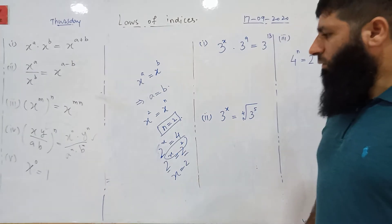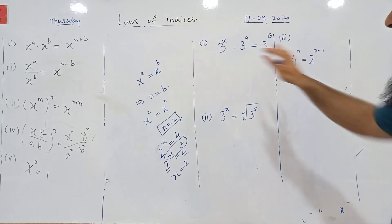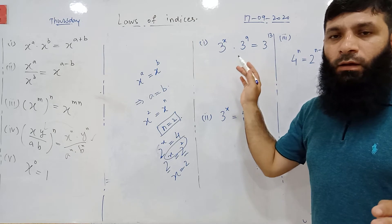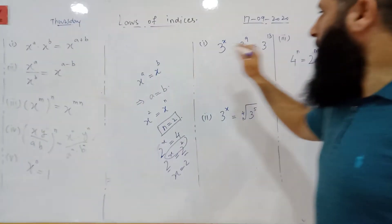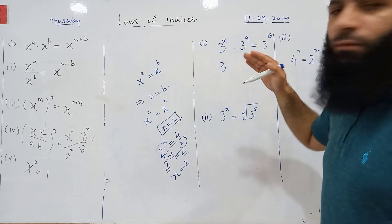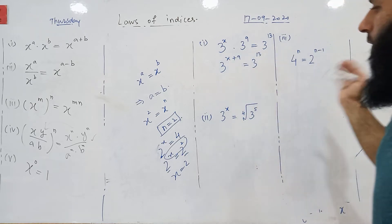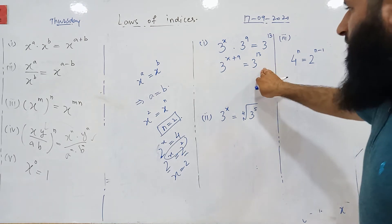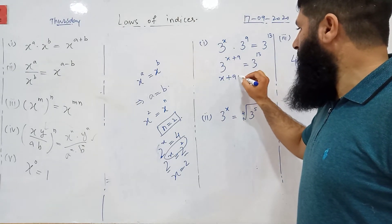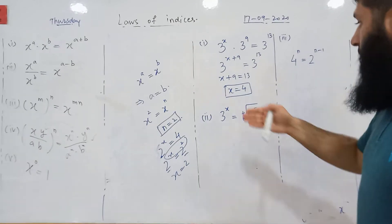Now we will solve equations involving indices. Look at this equation: on the left hand side we have 3 raised to power x multiplied by 3 raised to power 9. We can use the first law of indices — when multiplying expressions with equal bases, we add the indices. This becomes 3 raised to power (x plus 9). Since both sides have the same base, we equate the indices: x plus 9 equals 32, so x equals 4.